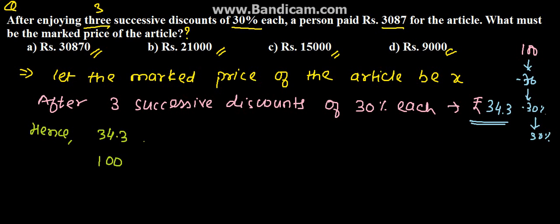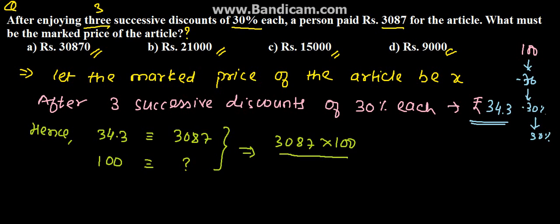If the price costs 100 rupees and is sold at 34.3, then if it is sold at 3087 rupees, we find the marked price by cross multiplication: 3087 × 100 divided by 34.3 equals rupees 9,000. So option D, rupees 9,000, is the marked price of the article.